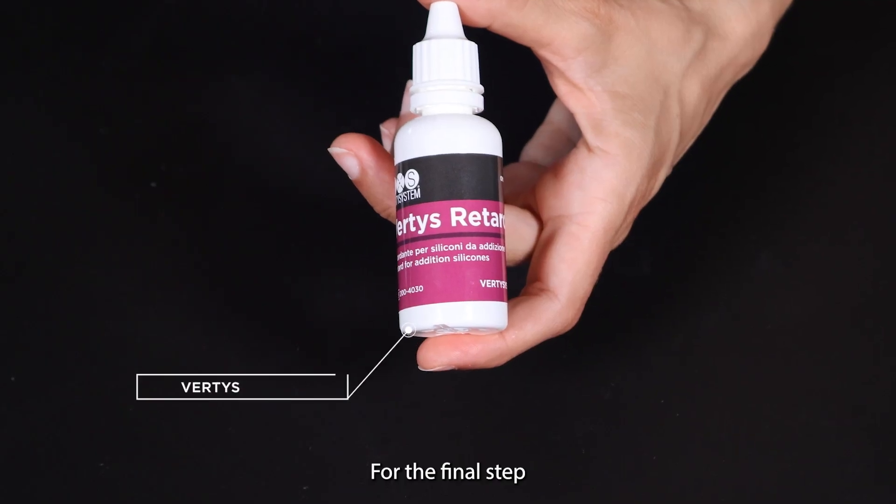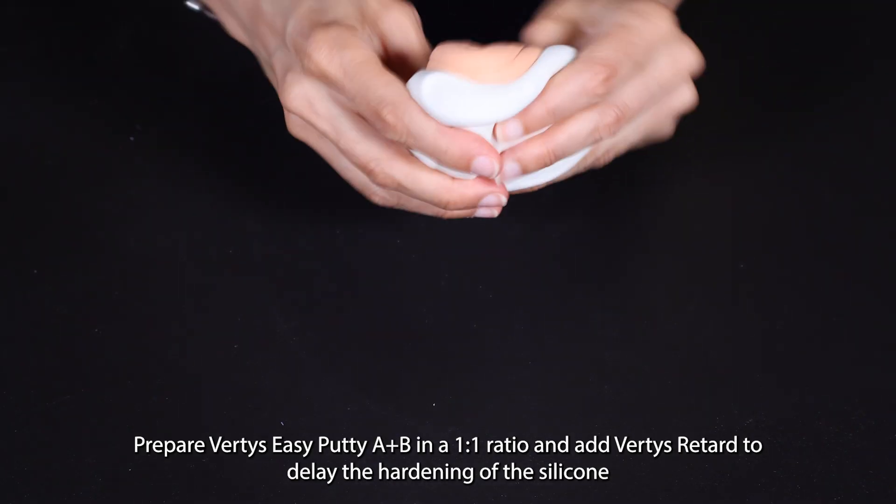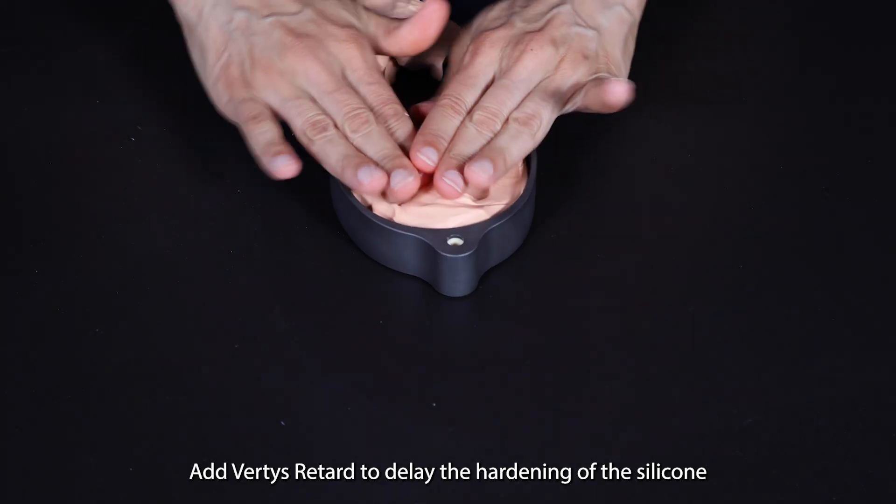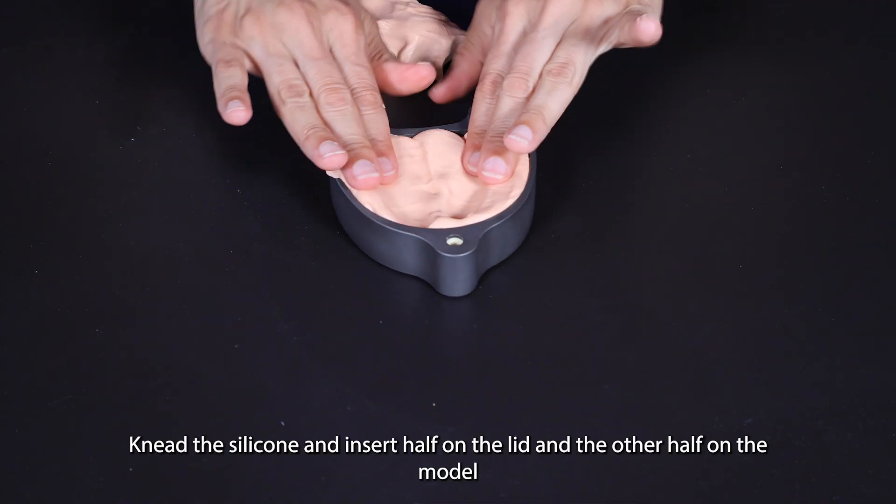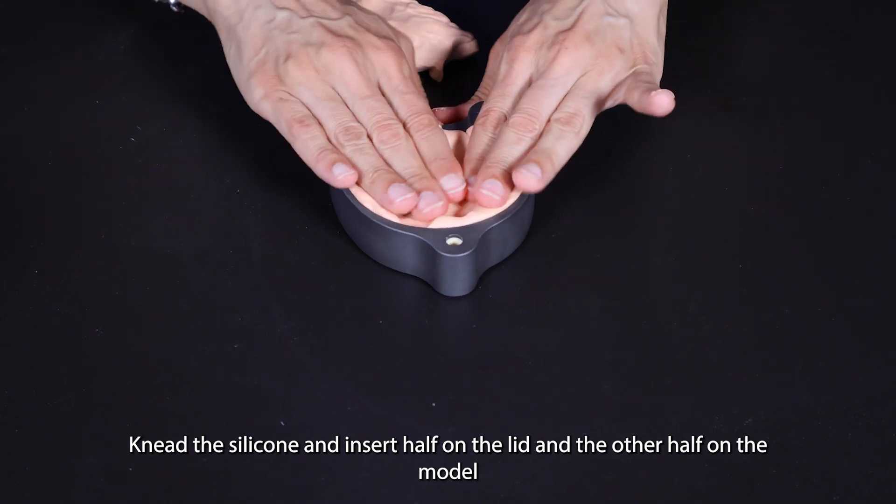For the final step, prepare Vertis Easy Putty A plus B in a 1:1 ratio and add Vertis Retard to delay the hardening of the silicone. Knead the silicone and insert half on the lid and the other half on the model.